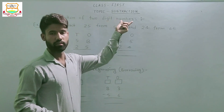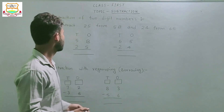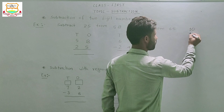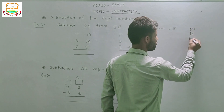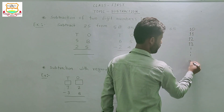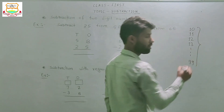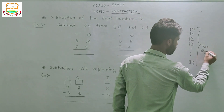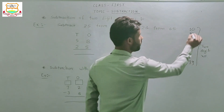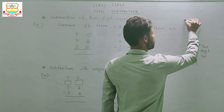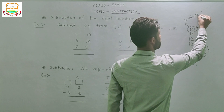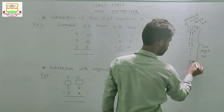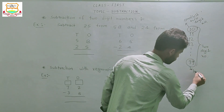Subtraction of two-digit numbers. Two-digit numbers are 10, 11, 12, 13, and so on up to 99. These all are two-digit numbers. 10 is the smallest two-digit number and 99 is the largest two-digit number.